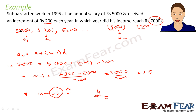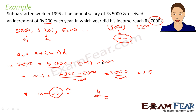We recognized this is an AP because the salary increases by 200 rupees each year. We used the formula An equals a plus (n minus 1)d: 7,000 equals 5,000 plus (n minus 1) times 200, since every year it increased by 200. We got n equal to 11.